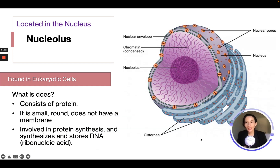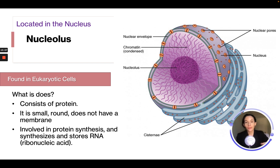Also located in the nucleus is the nucleolus, found in eukaryote cells. It is small, round, and does not have a membrane. It is involved in protein synthesis and synthesizes and stores RNA. The nucleolus sits right in the center of the nucleus, and its key job is to synthesize and store RNA as well as synthesize proteins.